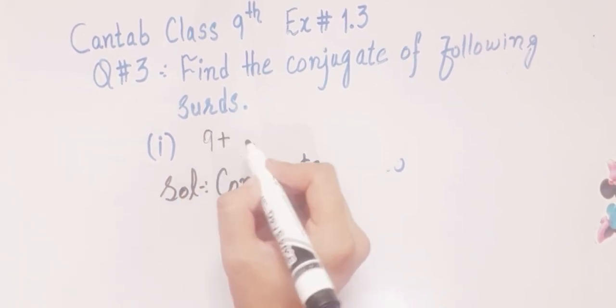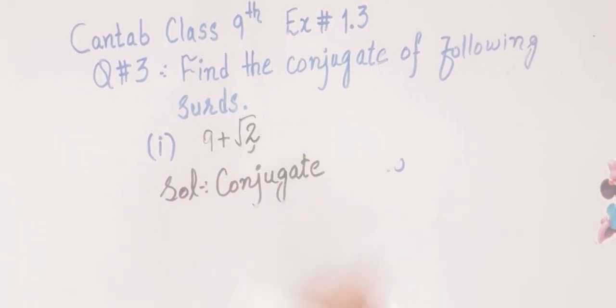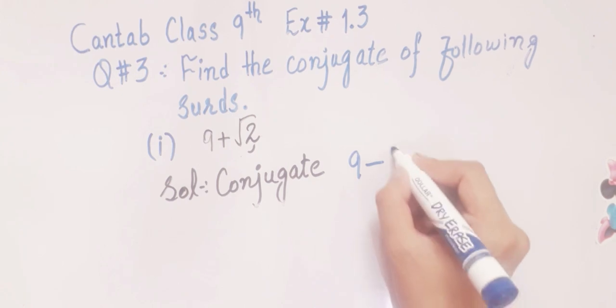Second part is 9 plus square root 2. So conjugate of 9 plus square root 2 will be 9 minus square root 2.